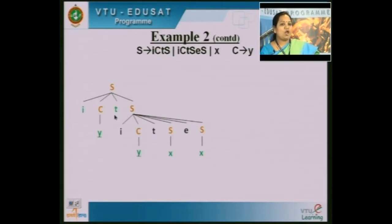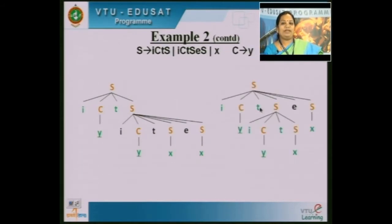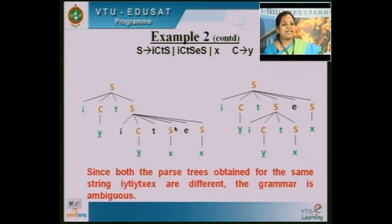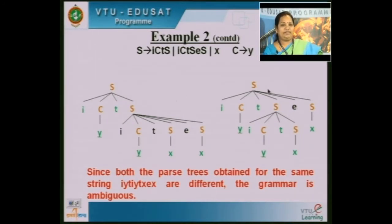The parse tree from the leftmost derivation and the parse tree from the rightmost derivation are both different. When two parse trees are different for the same given string, the grammar is ambiguous. Here we derived the parse tree from one leftmost derivation and the other from a rightmost derivation.